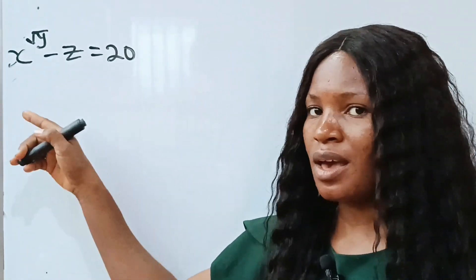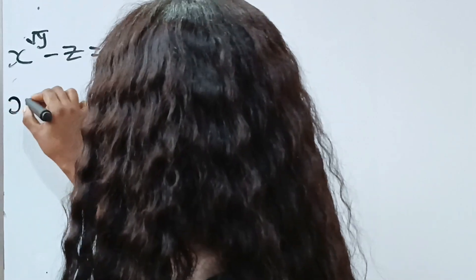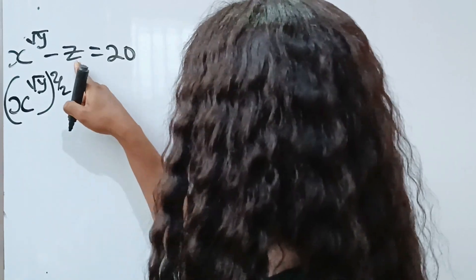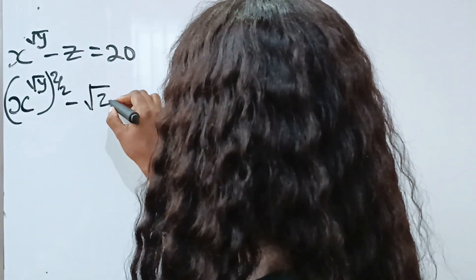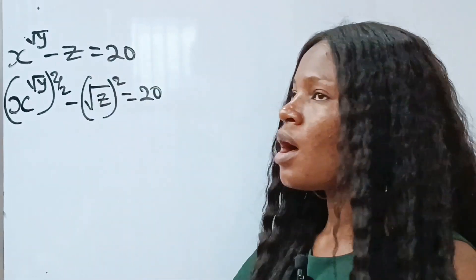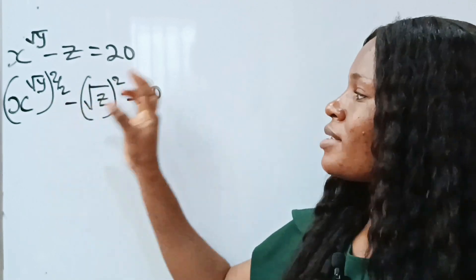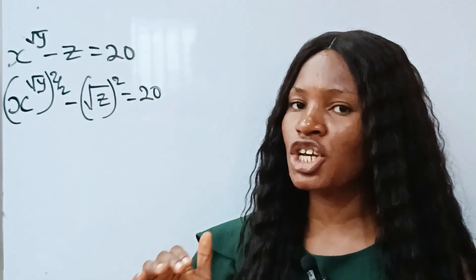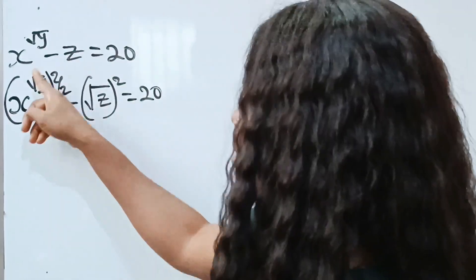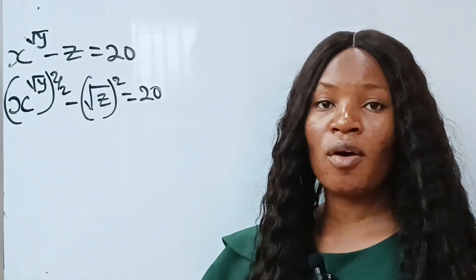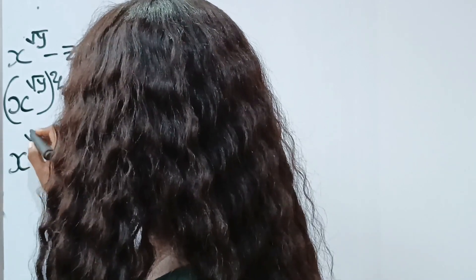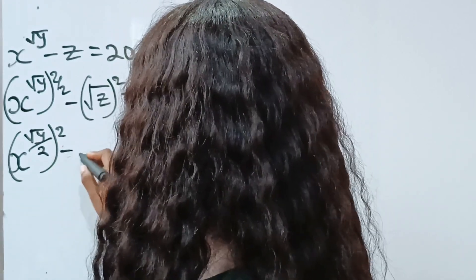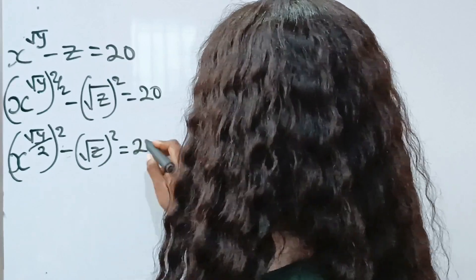First, I need to introduce difference of two squares here. To do that, I need to write this. So this is x raised to the power of z·y, raised to the power of 2 over 2. Minus — the only way to introduce a 2 here is to take the square root of z and also square it without changing the value. When you have two values in this way, that is two powers on a base, you can interchange their position. So I will write x to the power of square root of y divided by 2, everything squared, minus square root of z raised to the power of 2, is equal to 20.